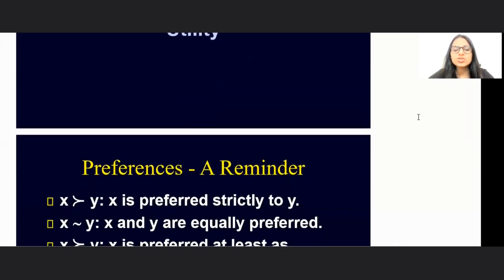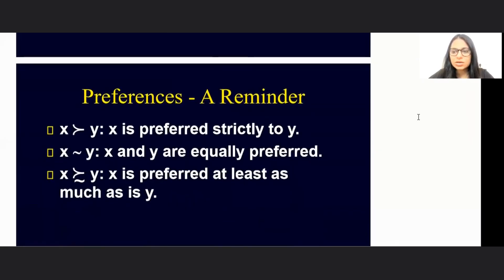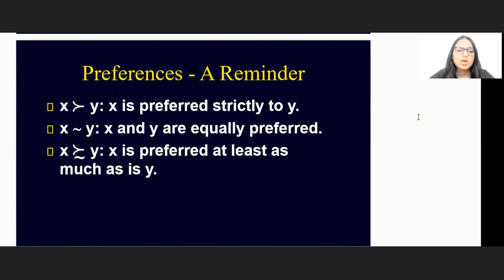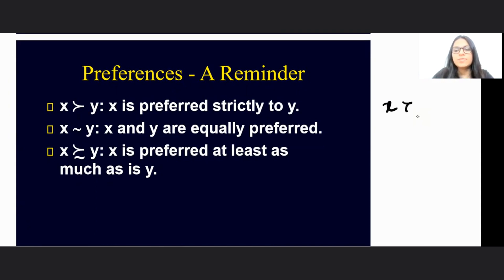Let's remind ourselves what we have done as part of Chapter 3. The first thing we tried to understand was related to preferences. When we would say that we prefer X over Y, this is the sign that we would have used.